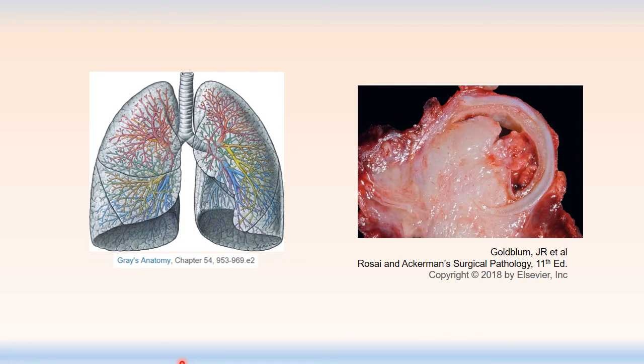Based on the evolution of squamous carcinoma it's intuitive to understand its distribution in the lungs. In heavy smokers the damage to the airways tends to be proximal, and as these airways become more damaged this is where squamous carcinomas arise. So squamous carcinomas have a propensity to occur within the central zones of the lungs in the hilar region. This gross image shows a cross section of a bronchus with its cartilaginous ring visible, with a bulky squamous carcinoma that has arisen from the airway surface, invaded the adjacent lung parenchyma, and grown into the bronchial lumen nearly occluding it.